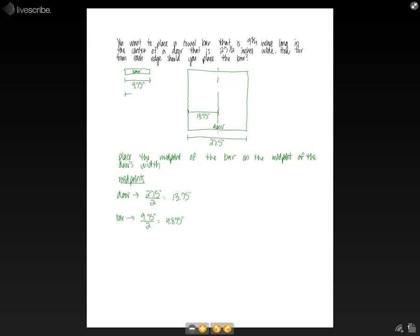So if we go up to our towel bar, 4.875 inches. Now, since we know how far off the center line our towel bar will be on each side, left and right, we can draw that in our picture. We know that this distance here is 4.875 and this distance here is 4.875, because we wanted the midpoints to line up.